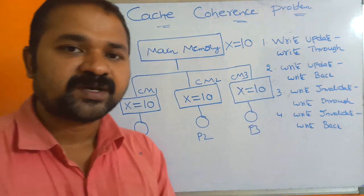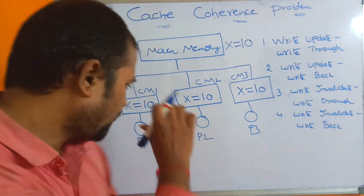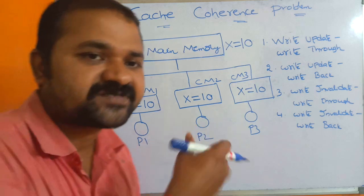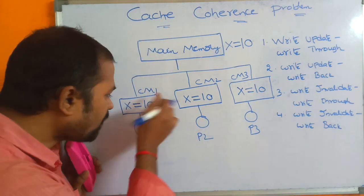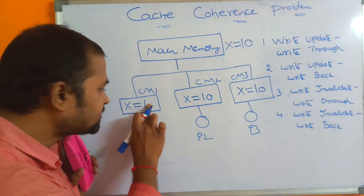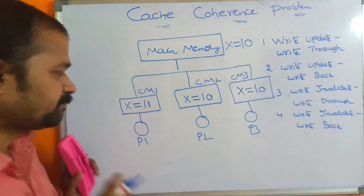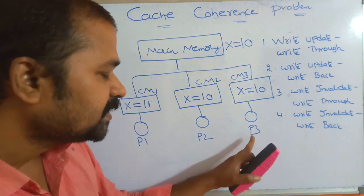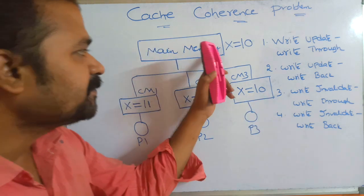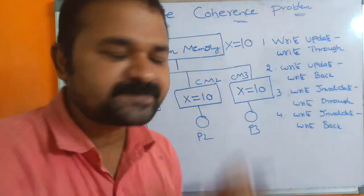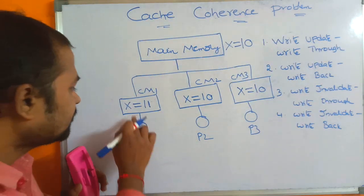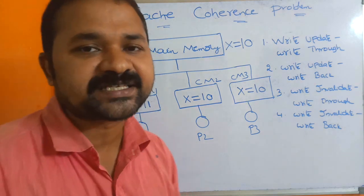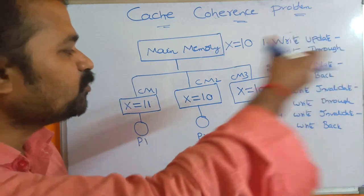Let us assume that processor P1 executes an instruction that increments X by 1. So now, after incrementation, X becomes 11 in P1's cache memory. Whereas in processor P2, X value is 10; in processor P3, X value is 10; and in main memory, X value is 10. But it is modified in processor P1's cache memory as 11. So the same variable has different values in main memory and the other cache memories.